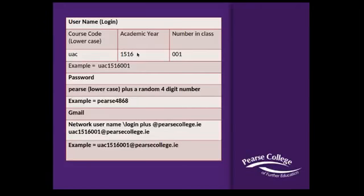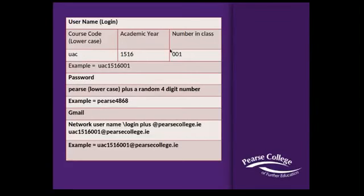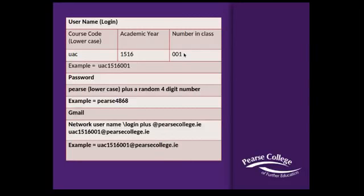The next part of your username login will state the academic year. If it is the academic year 2015 to 2016, then your number will be 1516. The last part of your user code or login is the number that you are in the class — so that could be 001 up to 025 if there are 25 people in your class.